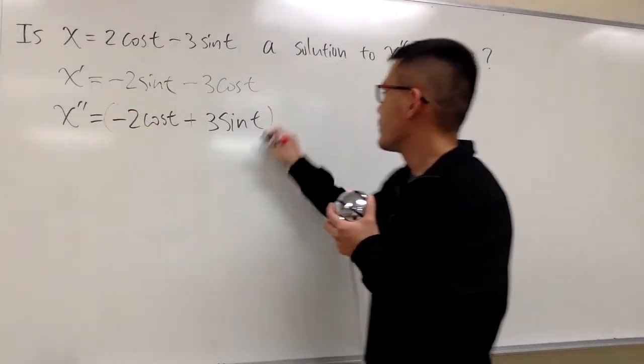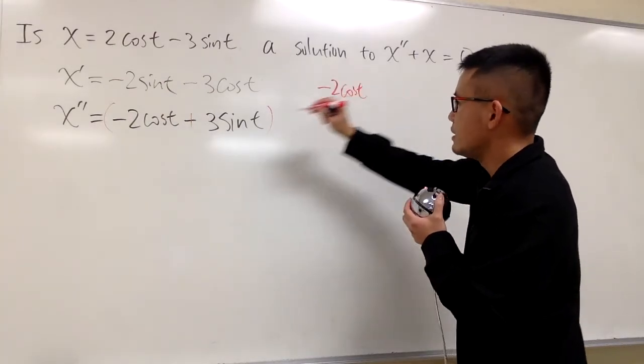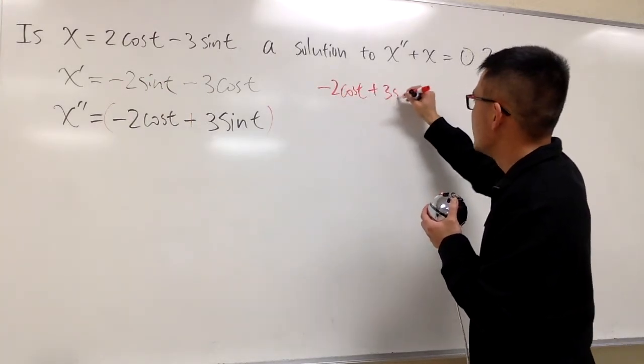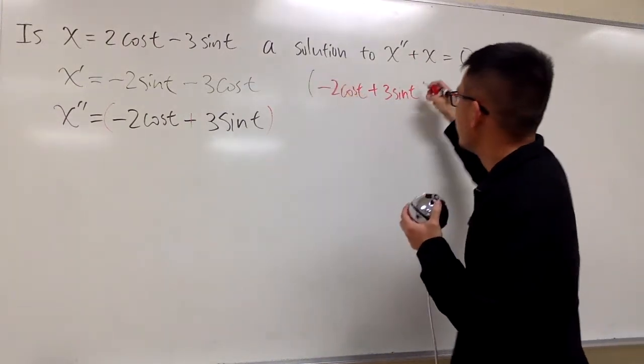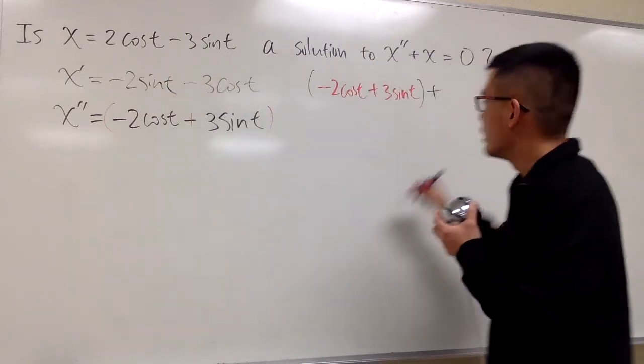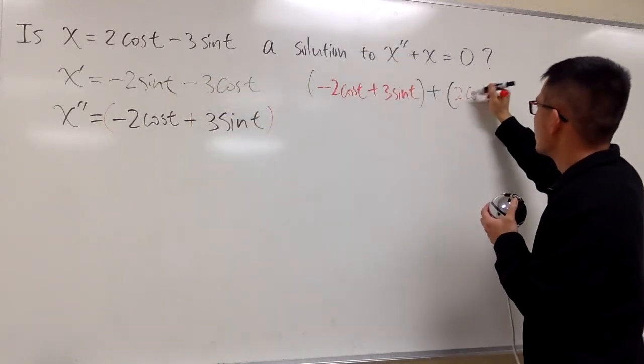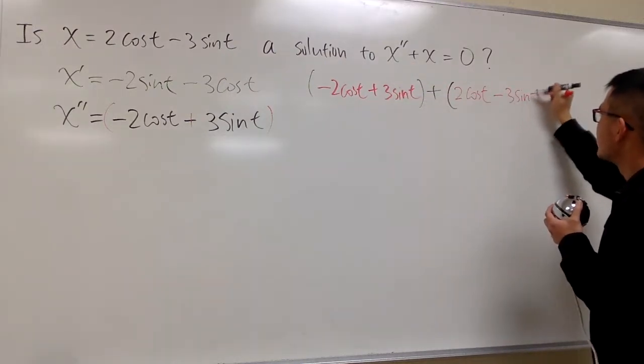This right here, go here, right? So we will have negative 2 cosine t plus 3 sine t for the second derivative. And we are going to add it with the original, which is 2 cosine t minus 3 sine t.